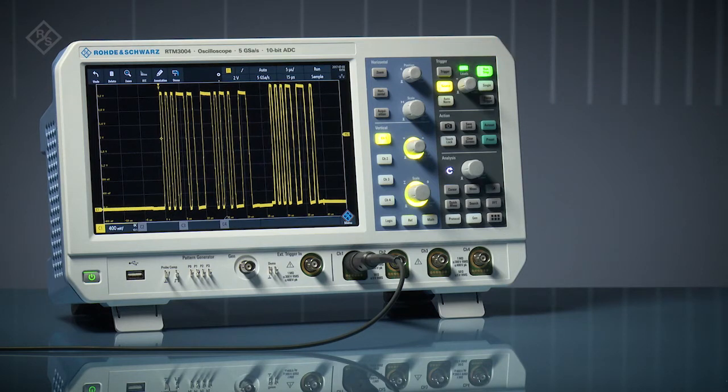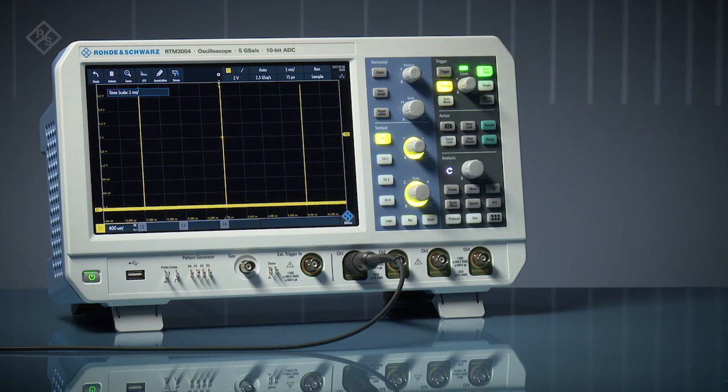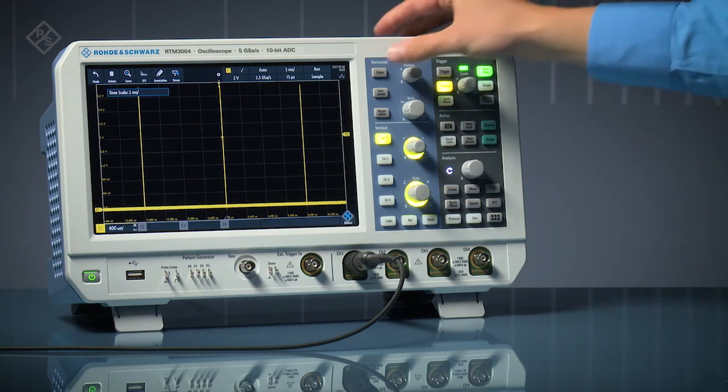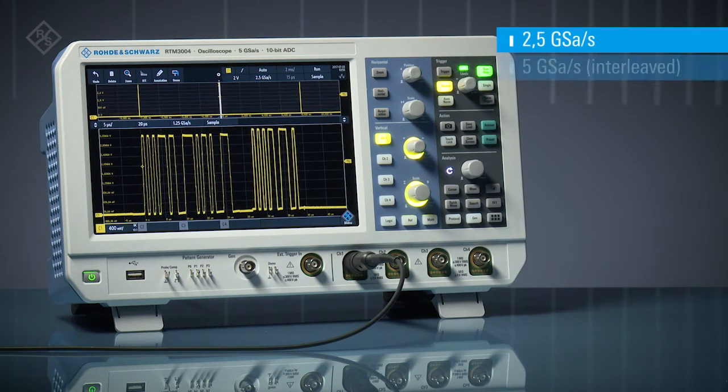Capturing longer times presents a bigger challenge. Let's increase the capture length by a factor of 400 to capture multiple bursts. When we zoom into a single burst, the scope still sees important signal detail. Deep memory allowed it to retain sufficient sample rate for full bandwidth. Scopes with less memory would be forced to reduce sample rate and miss important signal detail.